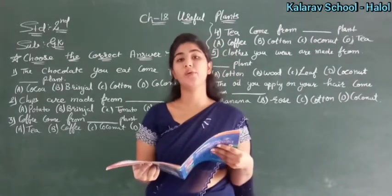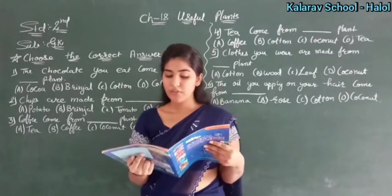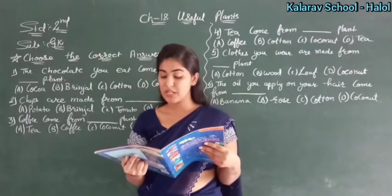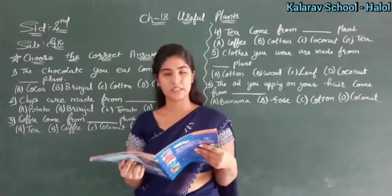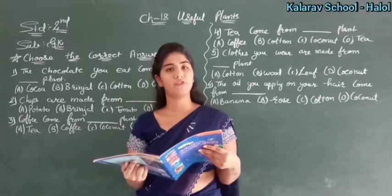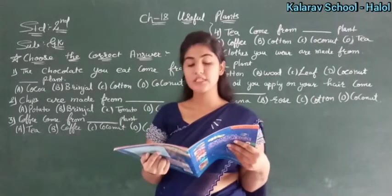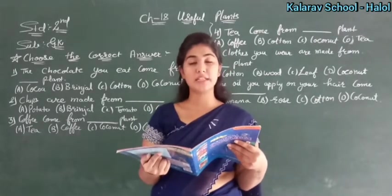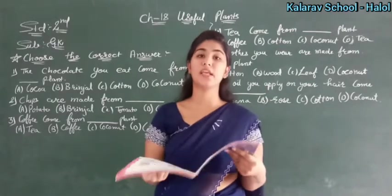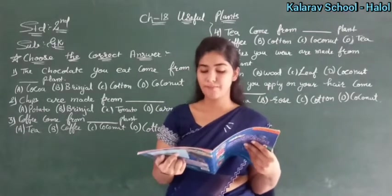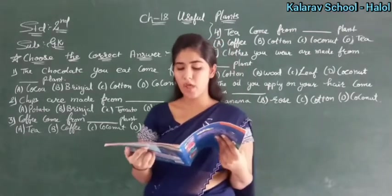Even rice, pulses, fruits, vegetables and so many other things are obtained from plants. Rice, fruits, and pulses — all of these we get from plants.